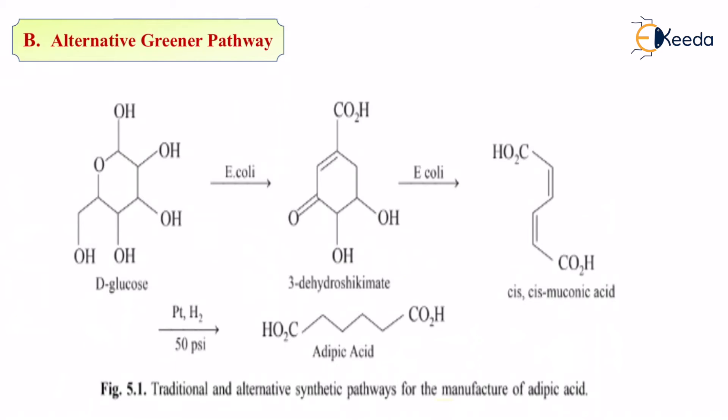Muconic acid is COOH on both ends. In the middle, you have two double bonds. These two double bonds are alternating in nature. That is very important to have alternating double bonds. That means the double bonds are not together. They are separated by a single bond. To this, if you add platinum, hydrogen and 50 PSI, you get your adipic acid. That is COOH on both ends. And in the middle, there is a straight chain.